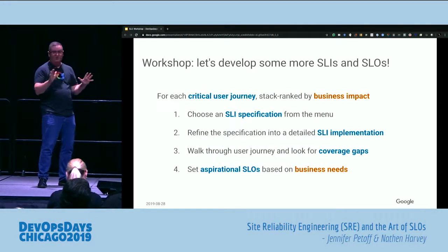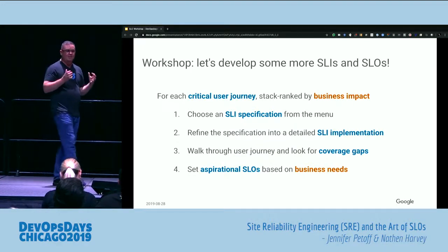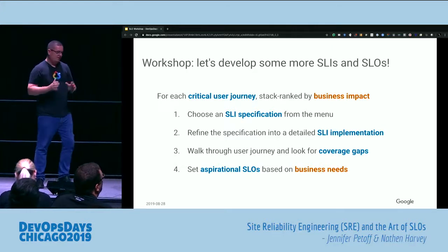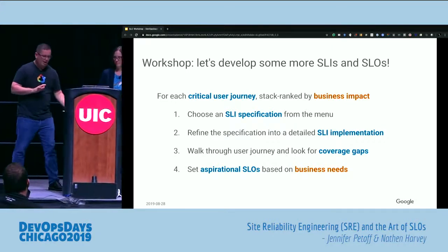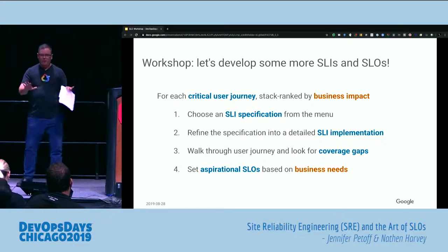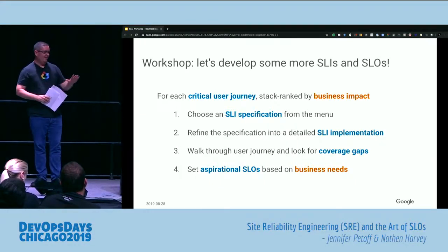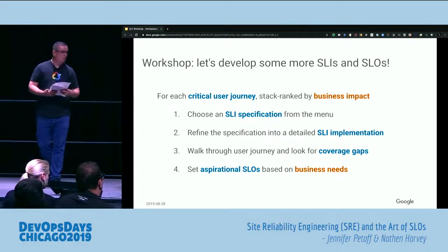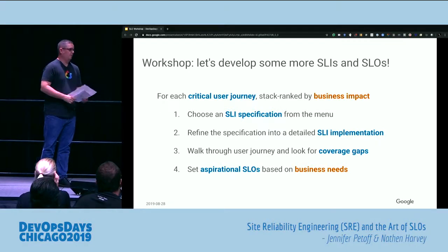We're mostly done with the presentation. Now we're going to put you to work. Here's the whole process: in the front of the stage we have a workbook called 'The Art of SLOs' with great content and details about the Fang Faction application. There's also a worksheet broken down into five sections: the user journey, SLI menu selection, SLI specification, implementation, and business needs.